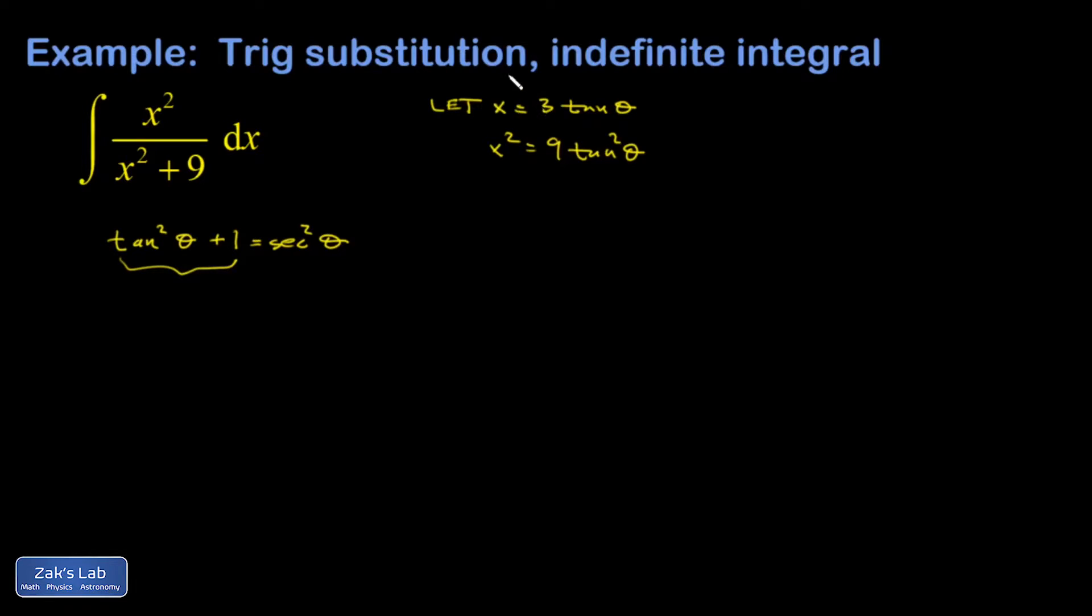I've also got to put the x squared up here in the numerator and I need to transform the differential. So dx if x is 3 tangent theta, dx is 3 secant squared theta d theta. And then I can rewrite my integral.